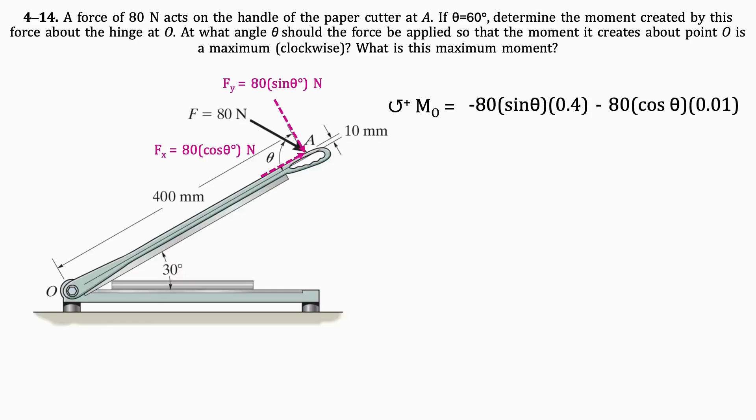The moment of the x component about O is the x component of the force times its distance from O, which is 0.01 meters. We will set this equation equal to 0 to find the angle that generates a maximum moment.